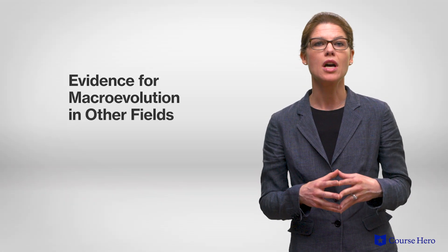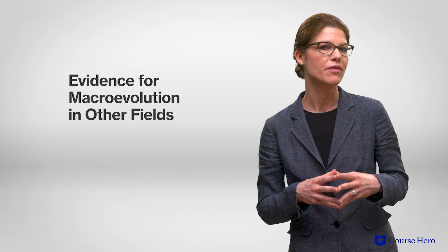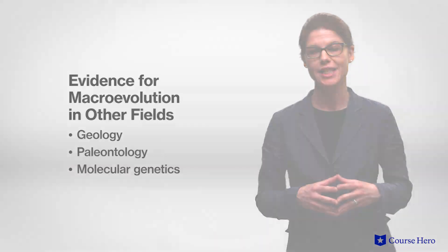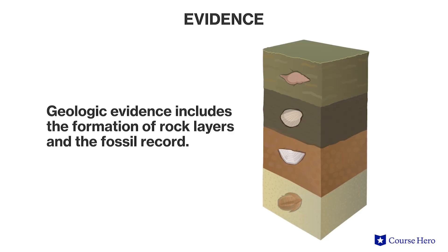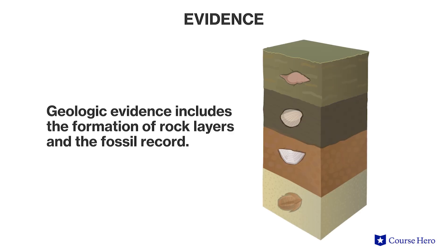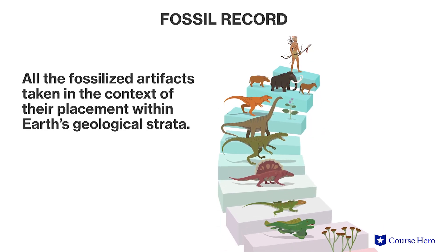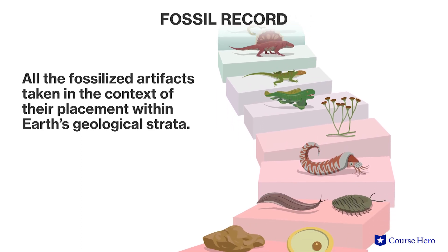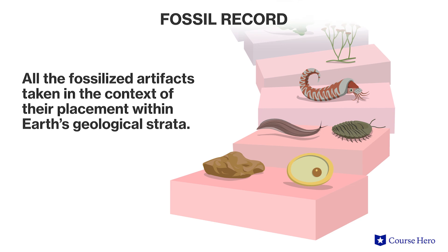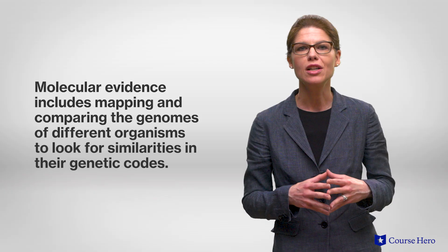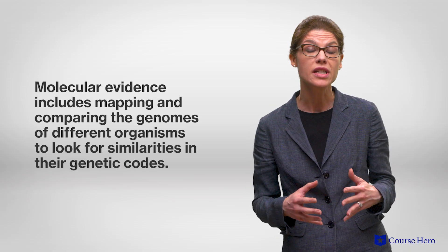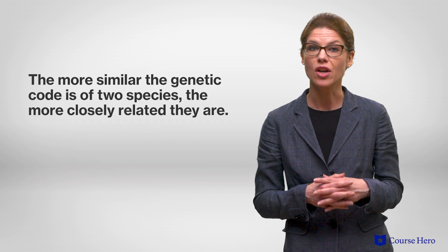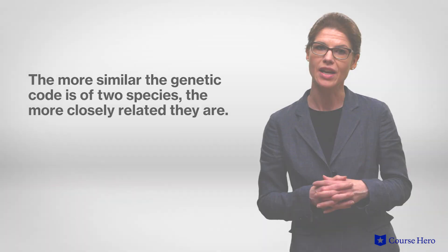Evidence for macroevolution comes from a variety of scientific fields, including geology, paleontology, and molecular genetics. Geologic evidence includes the formation of rock layers and the fossil record. The fossil record opens up a window into what organisms on Earth looked like a long time ago, and it provides glimpses into the evolution of life over billions of years. Molecular evidence includes mapping and comparing the genomes of different organisms to look for similarities in the genetic codes. The more similar the genetic code is of two species, the more closely related they are.